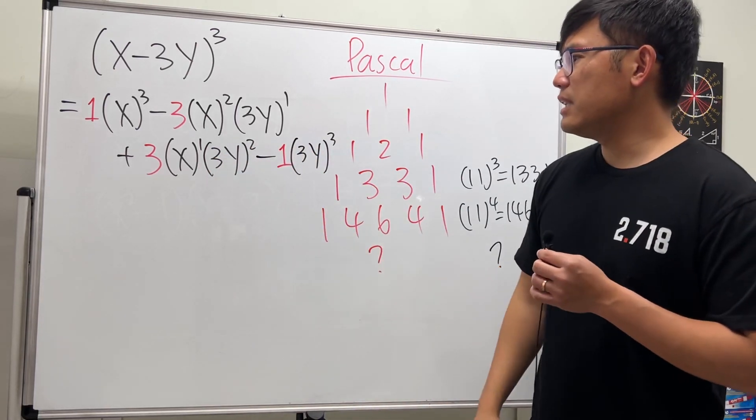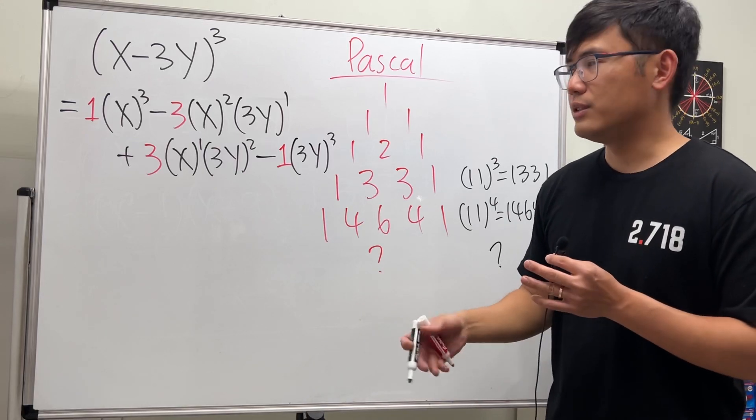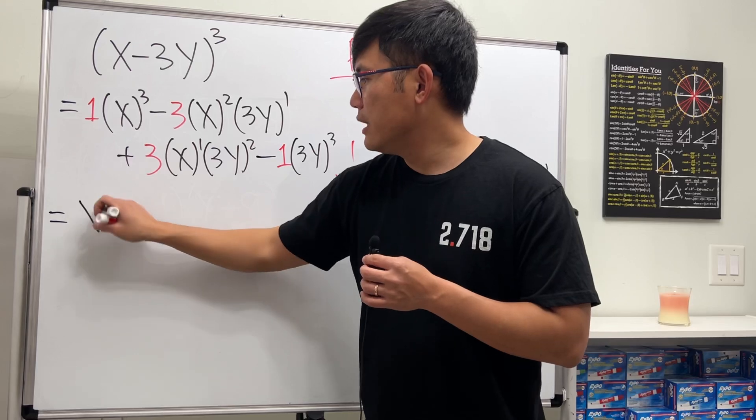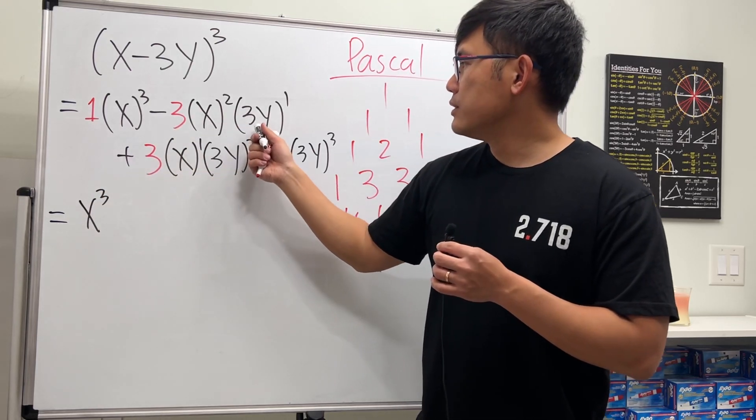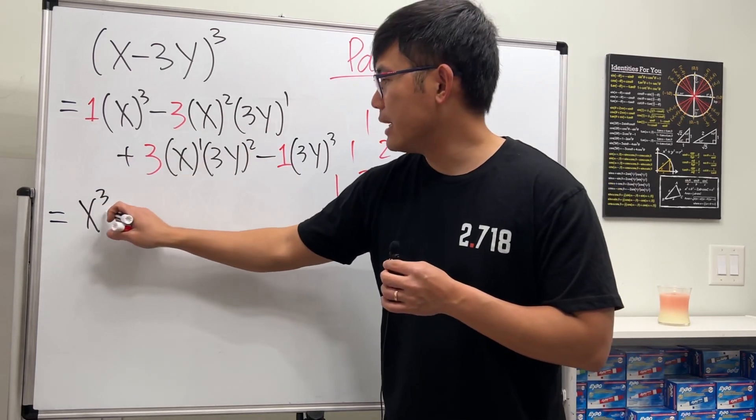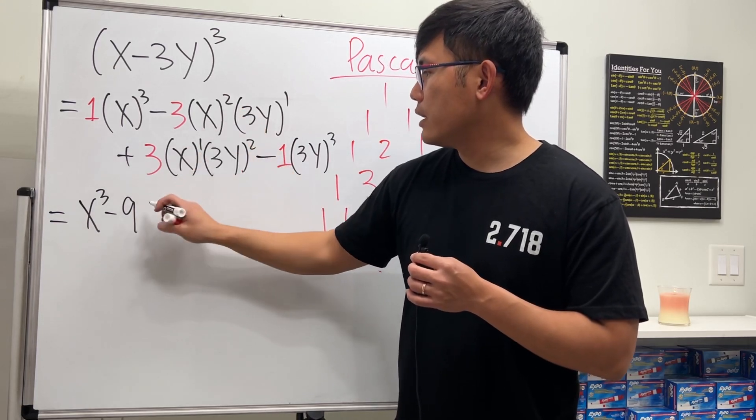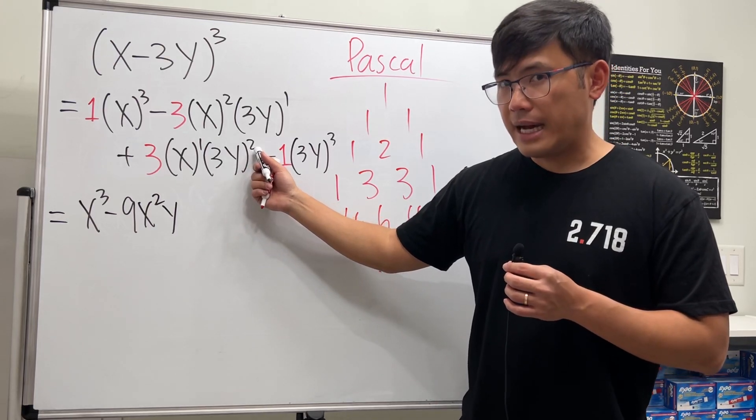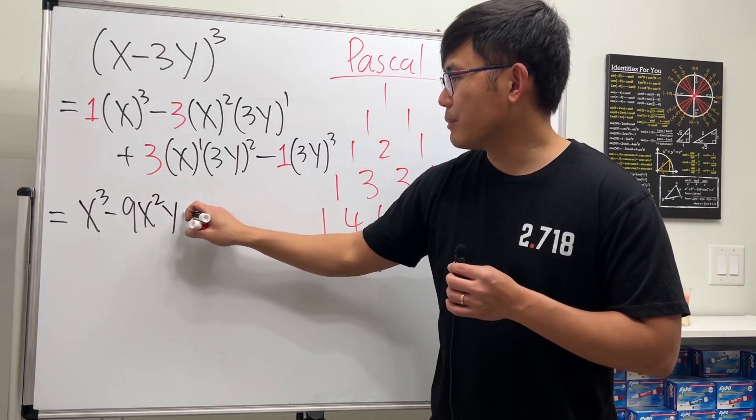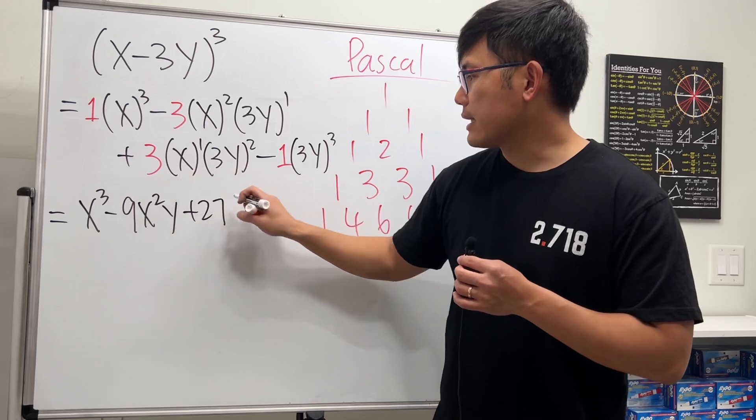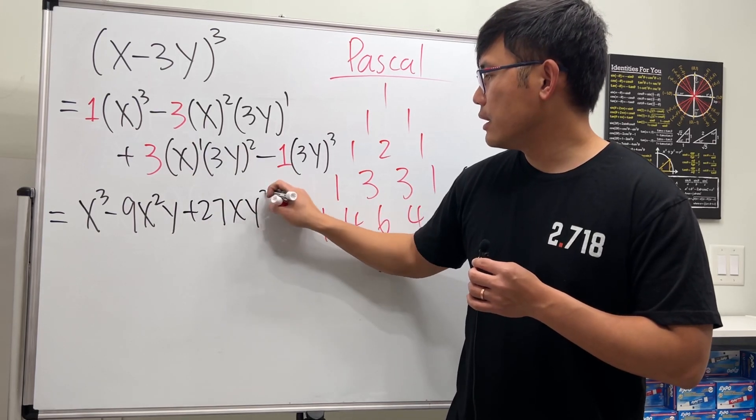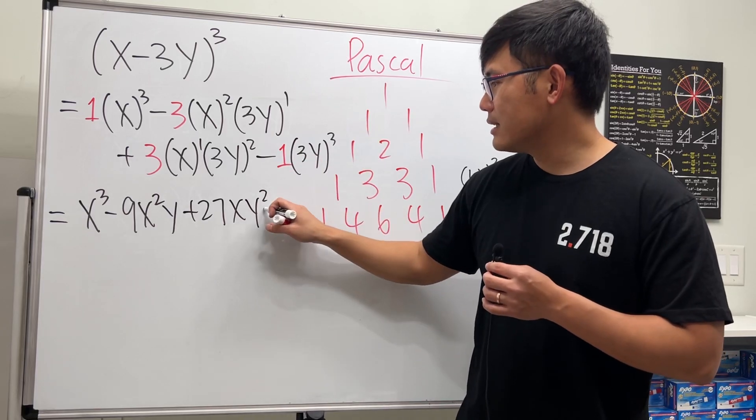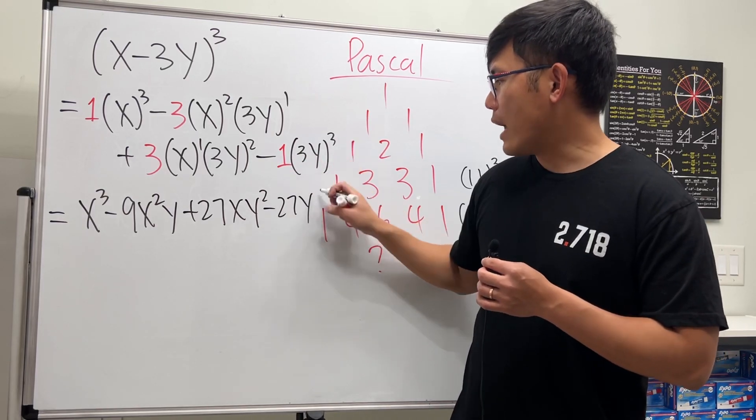So ladies and gentlemen, we have x to the third power. This is three times three, so we have minus 9x²y. And this right here is nine times three is 27, so plus 27xy². And lastly, three to the third power is 27, and that's a minus, so minus 27y to the third power. And this is it.